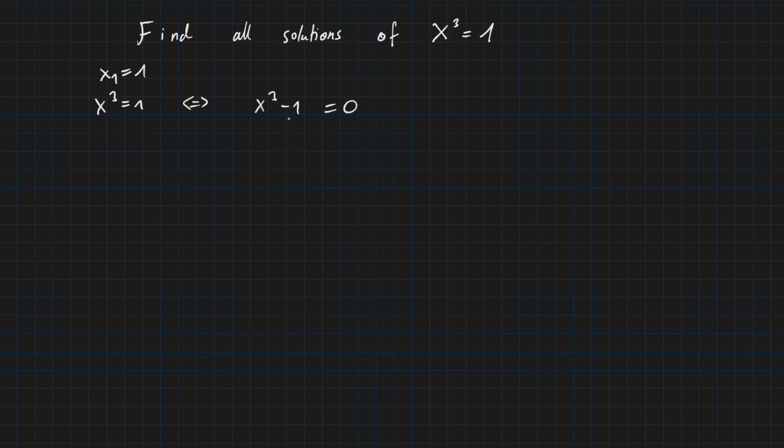And of course we already know one zero - it is 1. So this means for this polynomial we can also factor it as follows: we have x cubed minus 1 equals x minus 1 times some other polynomial. Let's call it p of x.